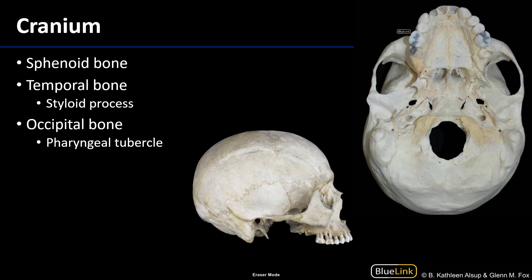There's also a temporal bone, and the temporal bone is rather extensive with respect to what we can see here. It has a feature that is germane to today's session, and that is the styloid process. Styloid, from stylus, means sharp and pointy, like the stylus that you use on a touch screen. That styloid process is going to be a muscle and ligament attachment site, but in the context of this session it's an attachment site for the stylopharyngeus muscle of the pharynx.